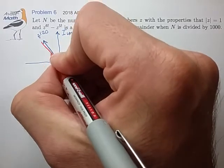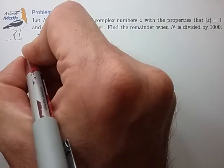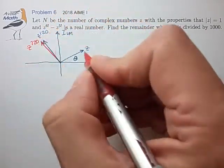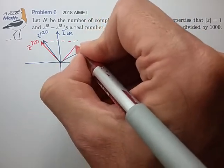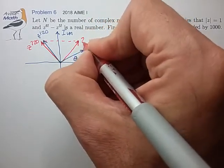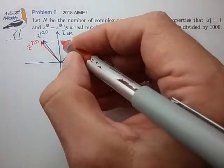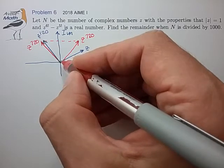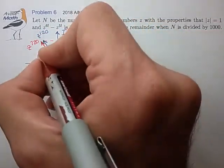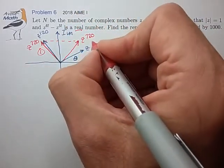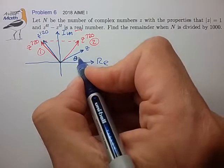That means z^720 could land in one of two possible locations. z^720 could land right on top of z^120, or it could land over here. Either of these two cases will give matching imaginary parts such that this subtraction will give you a real number. Let's call this situation 1, let's call this situation 2, and see if we can solve for what that means in terms of the angle theta.